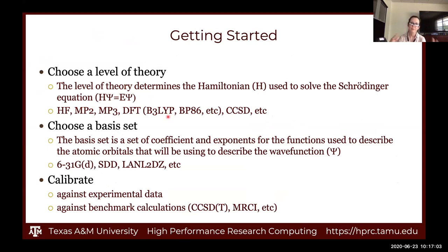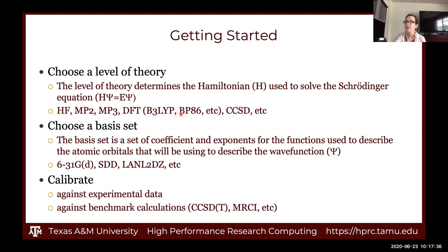After you have your molecular system, you have to decide about a level of theory. The level of theory will determine the Hamiltonian used in the Schrödinger equation. There are many options: Hartree-Fock, Møller-Plesset series, density functional theory, coupled cluster, and more. Which one you choose really depends — usually the literature is the best place to start. Sometimes your choice of level of theory also comes down to computational cost: what can you afford to calculate?